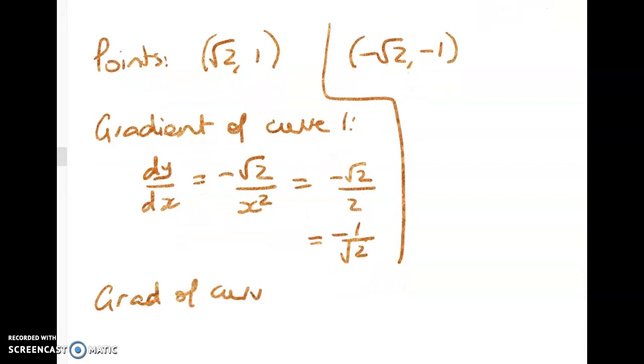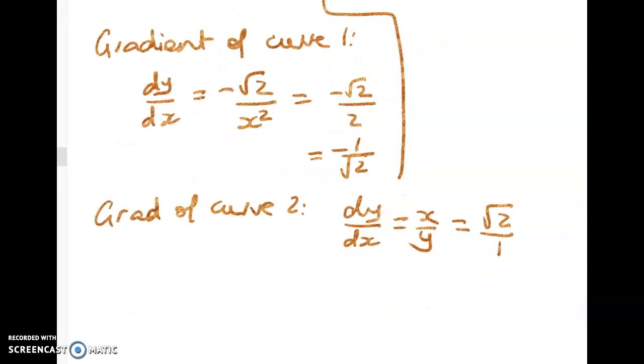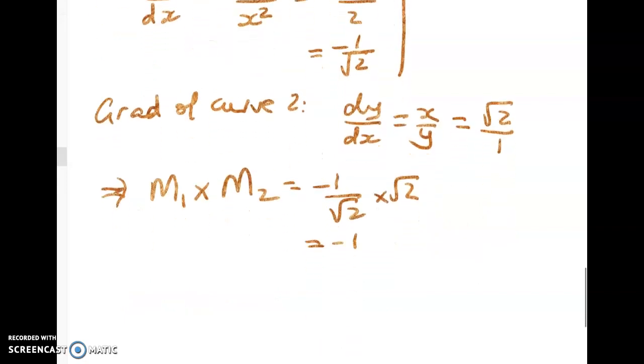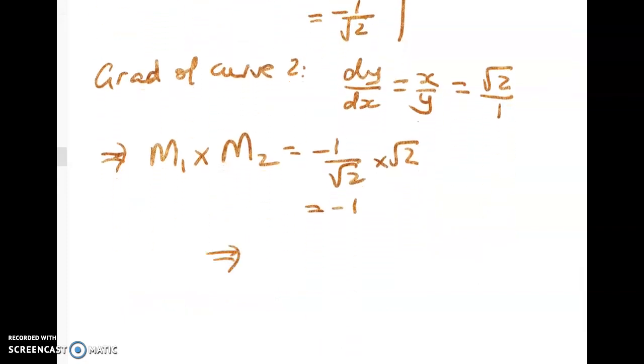dy by dx is equal to x over y. It's another reason to use implicit is that it's very very straightforward to now substitute in. So we've got root 2 over 1. So we've got m1 times m2 is equal to negative 1 on root 2 times root 2 which is negative 1. Therefore gradients are perpendicular.